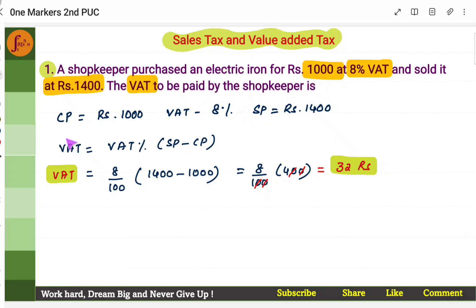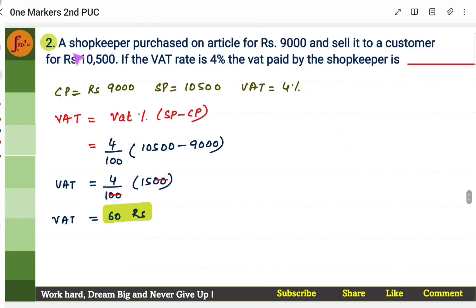Now what is the formula for VAT? VAT percent into selling price minus cost price. So how much he is selling it at Rs. 1400 and how much did he buy it for Rs. 1000? He bought it for Rs. 1000 and what is the VAT percent? 8%. So 8% means 8 by 100. Now you get the VAT. So he has to pay Rs. 32.